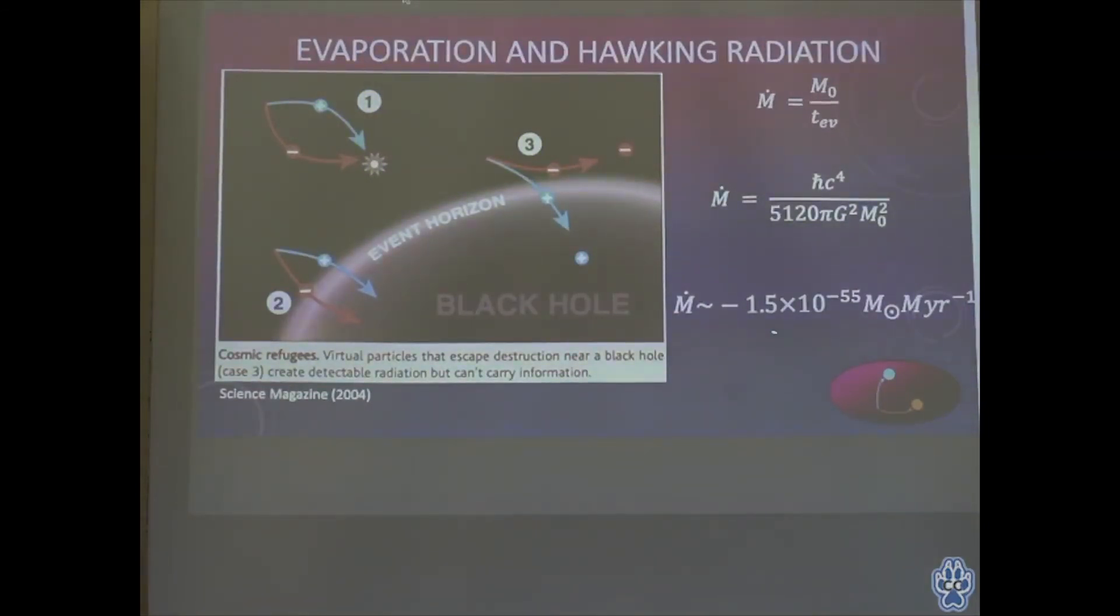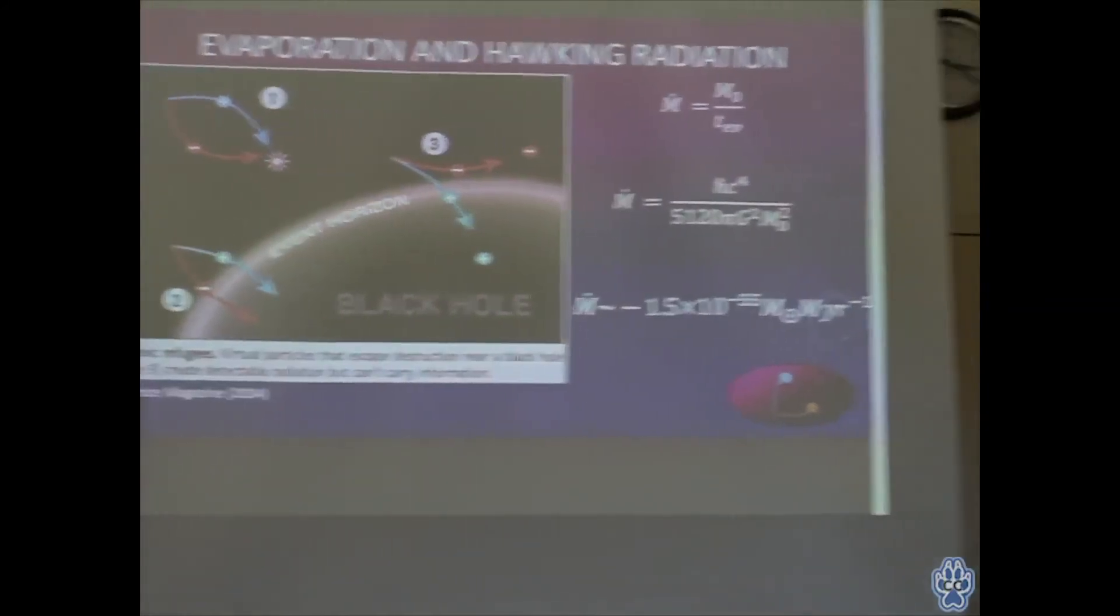This results in a loss of mass from the black hole. This process is extremely slow. By our calculation, we estimated about 1.5 × 10^-55 solar masses per million years, which is so incredibly slow that black holes will be some of the last dynamic objects in our universe. After all the stars warp and everything dies out, these black holes will be the last thing to die and evaporate away.